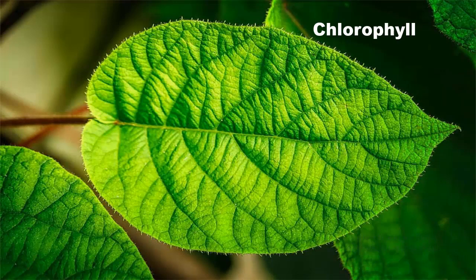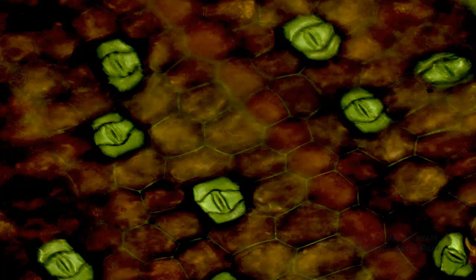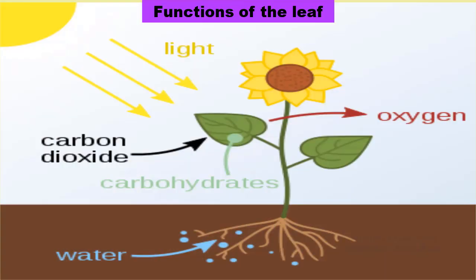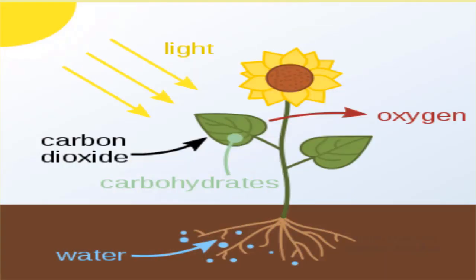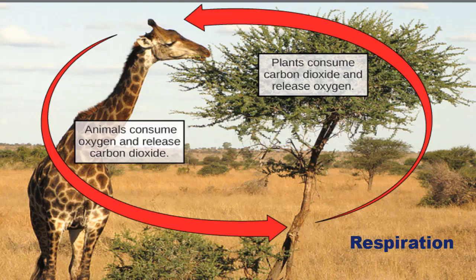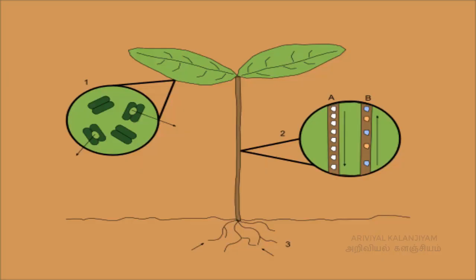These outgrowths are called stipules. The green color of the leaf is due to the presence of a green colored pigment called chlorophyll. On the lower side of the leaf there are tiny pores or openings known as stomata. The green leaves prepare food by the process of photosynthesis. Leaves also help in respiration and carry out transpiration.